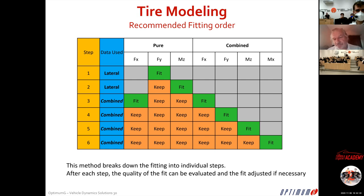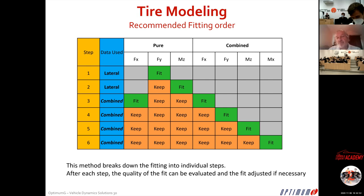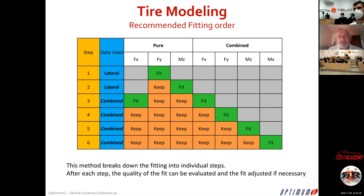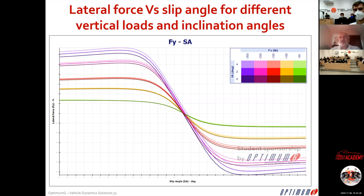You have two solutions: do everything in MATLAB or C++, or use software like Optimum Tire. I'm not pushing you to buy it — the question is whether you're building software or building a car. Optimum Tire is normally $45,000, but students can get it for $295 — less than one percent of the full price.